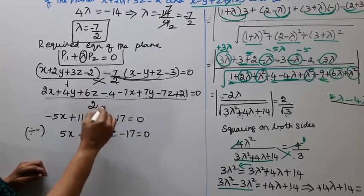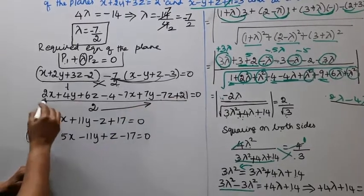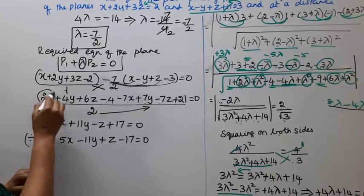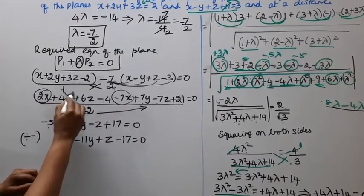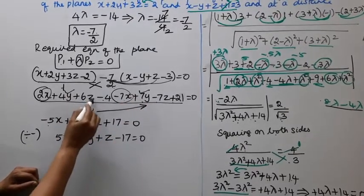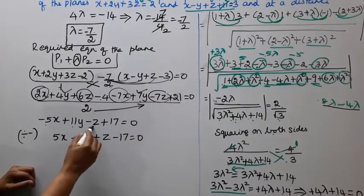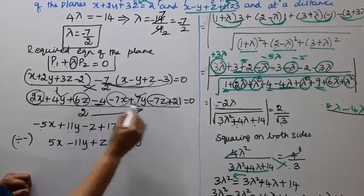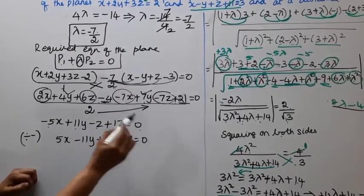Combining like terms: 2x minus 7x gives minus 5x; 4y plus 7y gives 11y; 6z minus 7z gives minus z; minus 4 plus 21 gives plus 17. So the equation is minus 5x plus 11y minus z plus 17 equal to 0.